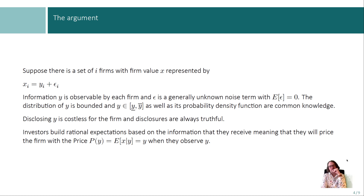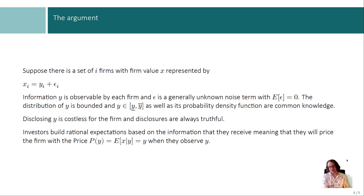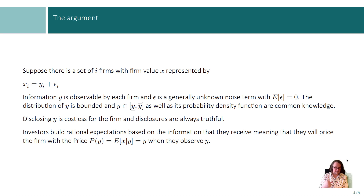Two extremely important assumptions: first, disclosing y is costless for the firm, so they can choose to disclose at zero cost. Second, if they disclose, disclosures are always truthful — they cannot lie. There is no disclosure cost and always truthful disclosure. Investors build rational expectations based on the information they receive. That means they will price the firm at the market based on either y — if they observe y, the price simply becomes y, since the error term has an expected value of zero — or based on the expectation of x conditional on not seeing y.